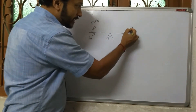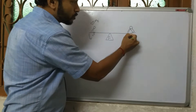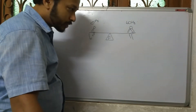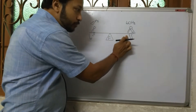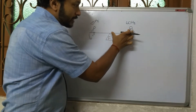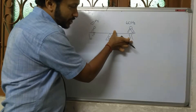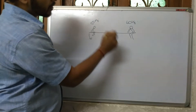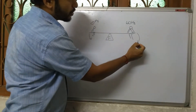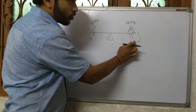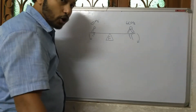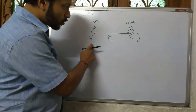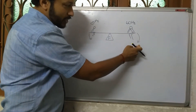Now if another boy is sitting on the other side, whose mass is 60 kg, then for this boy the seesaw will tilt in the other direction — clockwise. So we call this clockwise torque. So this side gives anticlockwise torque and the other side gives clockwise torque.